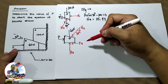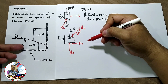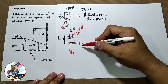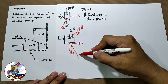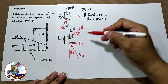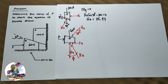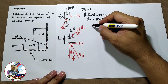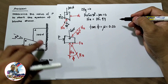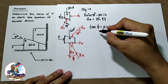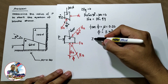Since the problem asks for the value of P required to start the system as shown, we need to push block B to the right, so F3 is directed in the opposite direction. We can represent F3 and N3 with the resultant force R3. The angle between N3 and R3 is the angle of friction. The tangent of the angle of friction equals the coefficient of friction, which is 0.2, so the angle of friction equals 11.31 degrees.